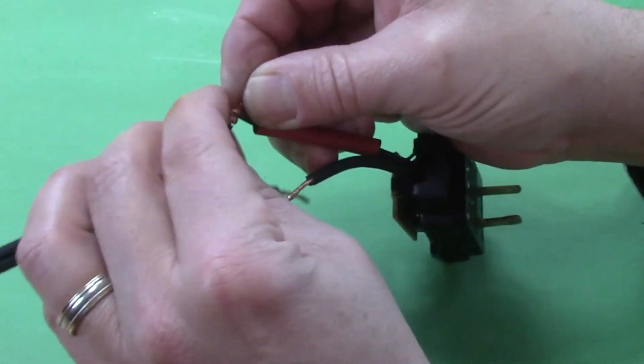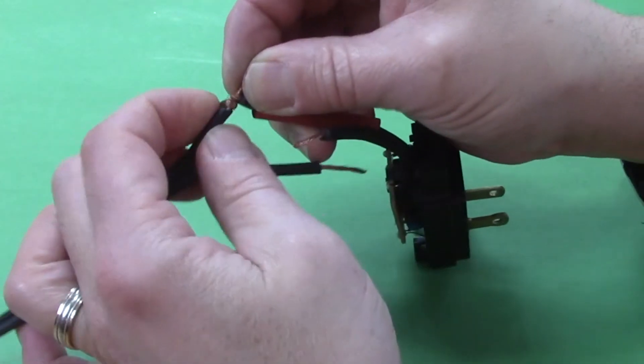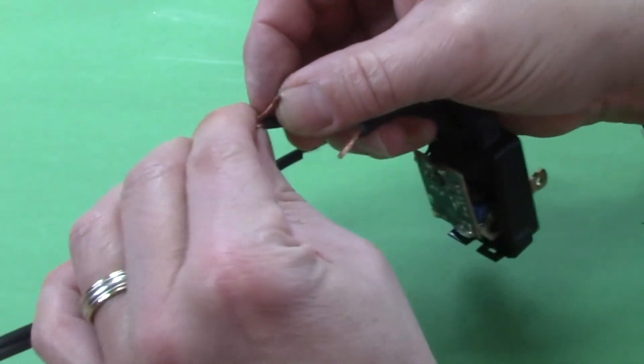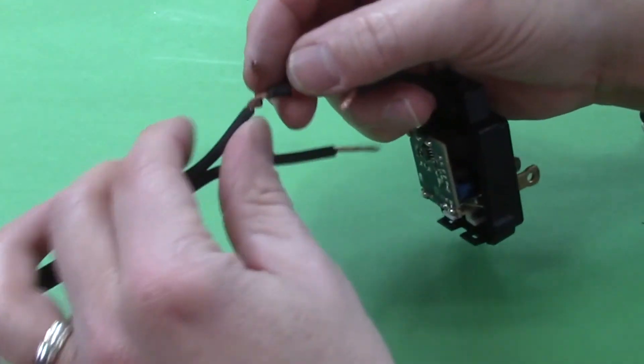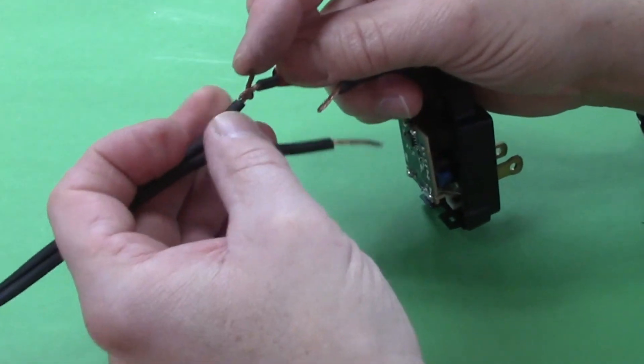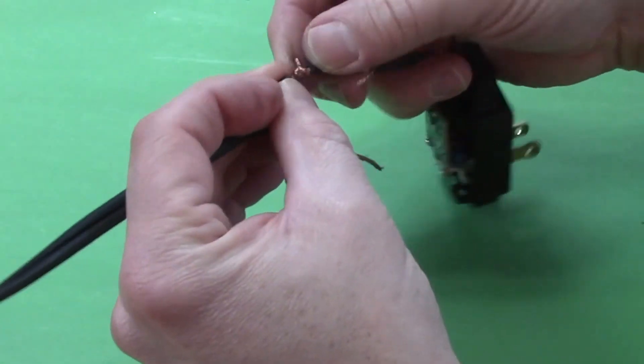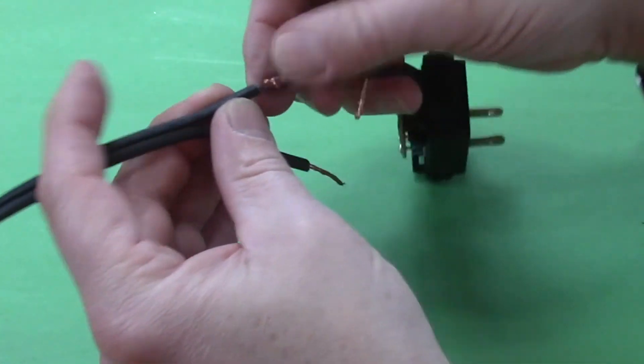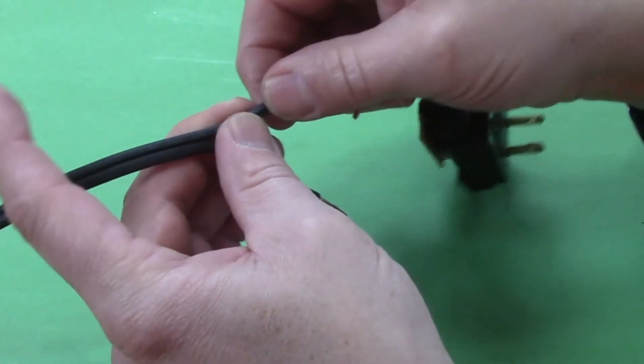I'm only going to go a little bit here. And then you're going to take the other wire and wrap it in the opposite direction. And what you have there is called a bell splice.